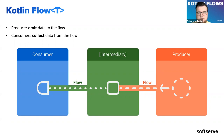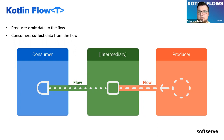A flow is very similar to an iterator that produces a sequence of values, but it uses suspend functions to produce and consume values, which gives us the ability to do these operations asynchronously. This means, for example, we can make API calls in the background and not block the main thread. Overall, a flow stream looks like this: we have some producer — for example, a database — then in the middle we have an intermediary section where we can transform flows, and then we have a consumer which is collecting data from our flow.